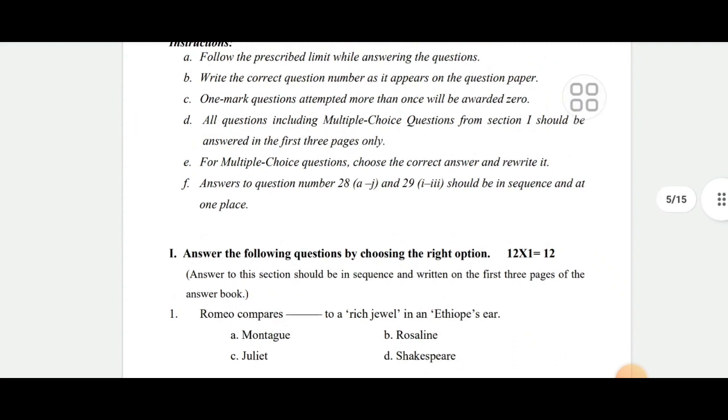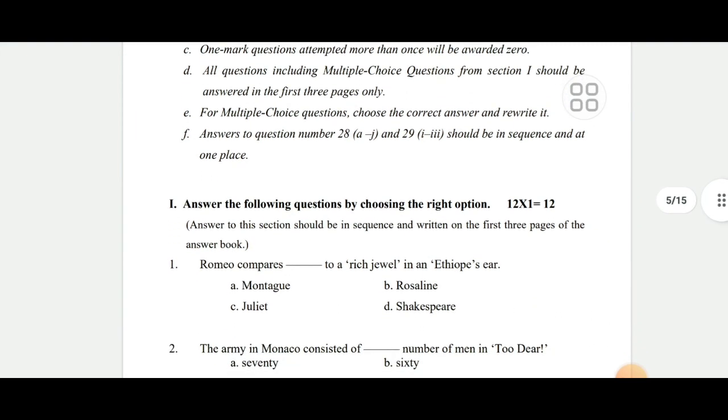For example, Romeo compared dash to a rich jewel in... This is the option. The options are A, B, C, D, and so on.